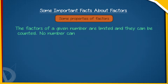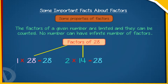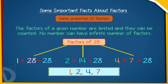The factors of a given number are limited and they can be counted. No number can have an infinite number of factors. We will first write it as a product of two numbers. Thus, the factors of 28 are 1, 2, 4, 7, 14, and 28.